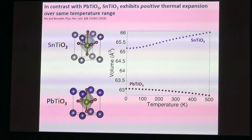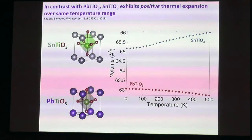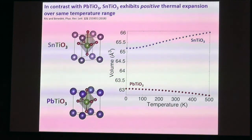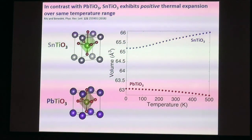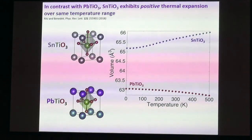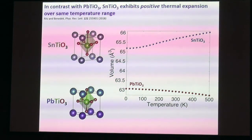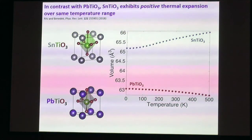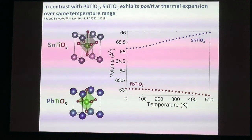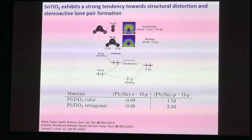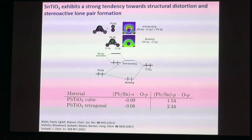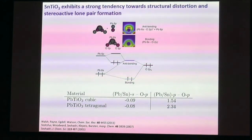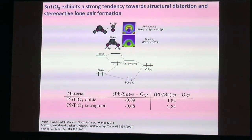We have access to far more microscopic details than Megaw had. We started by comparing lead titanate to tin titanate—a very similar material but one that undergoes positive thermal expansion over the same temperature range that lead titanate undergoes negative thermal expansion. The question was: why is that?